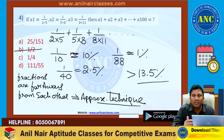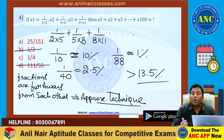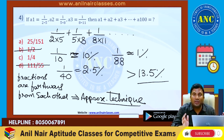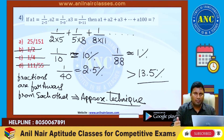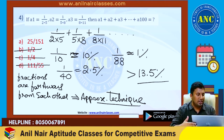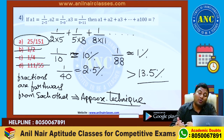1 by 2 is 50 percentage, 1 by 4 is 25 percentage. Answer should be just greater than 13.5 percentage. We got the answer as 25 by 151.